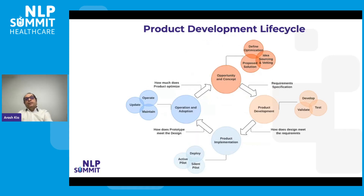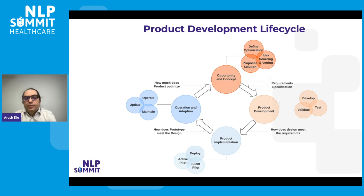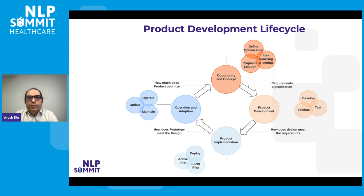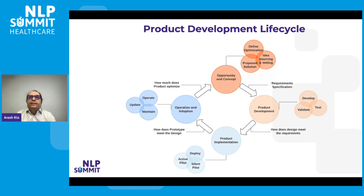We don't have time to go into the full product development lifecycle in detail, but what we do is pretty simple. We get ideas and problem statements from leadership and different service lines, translate them into technology, build models and pipelines and applications, put them into production, run a silent pilot, then start with a small number of point-of-cares and users, refine the workflow, and scale up across one hospital or the full health system. This lifecycle repeats continuously.